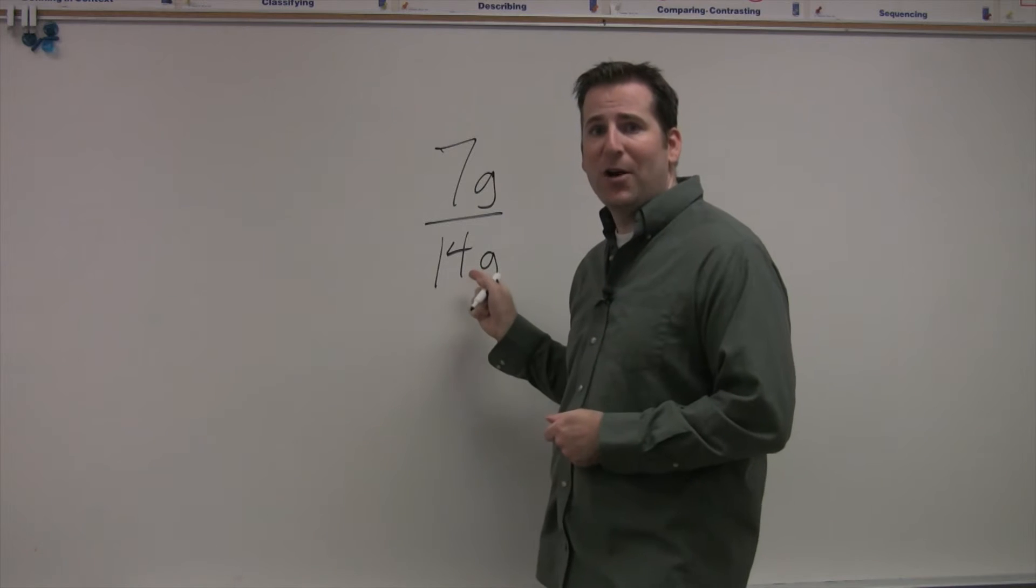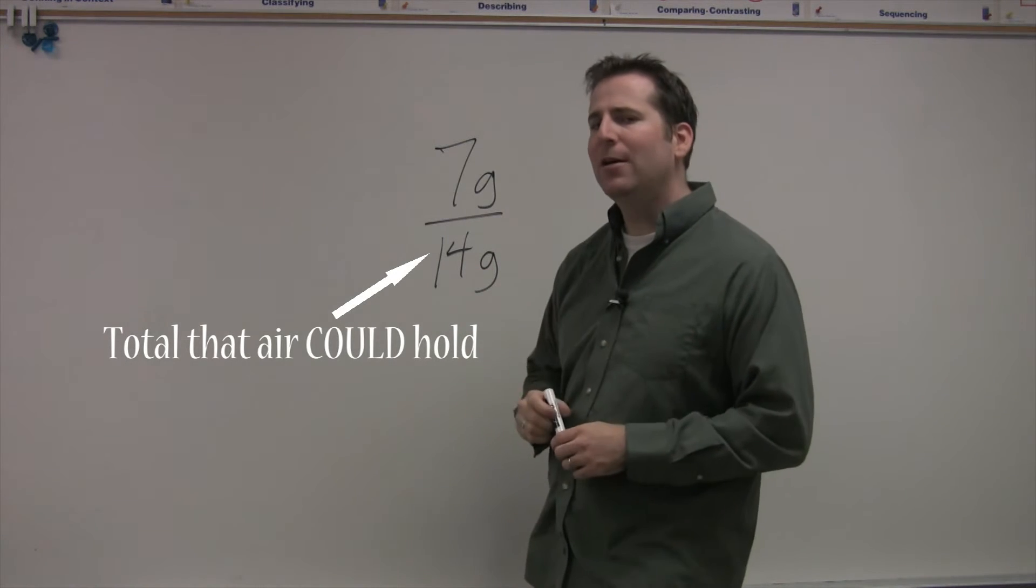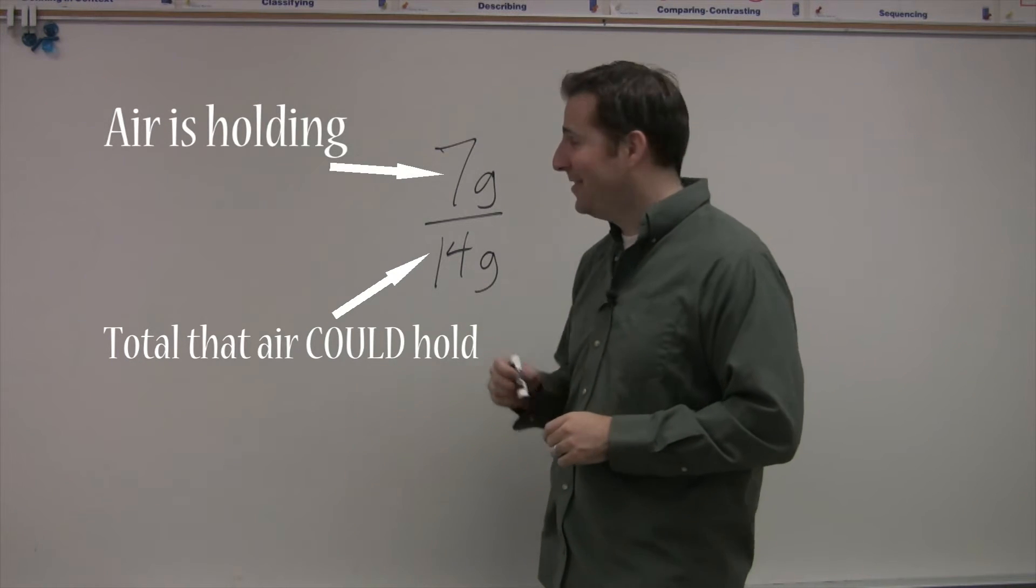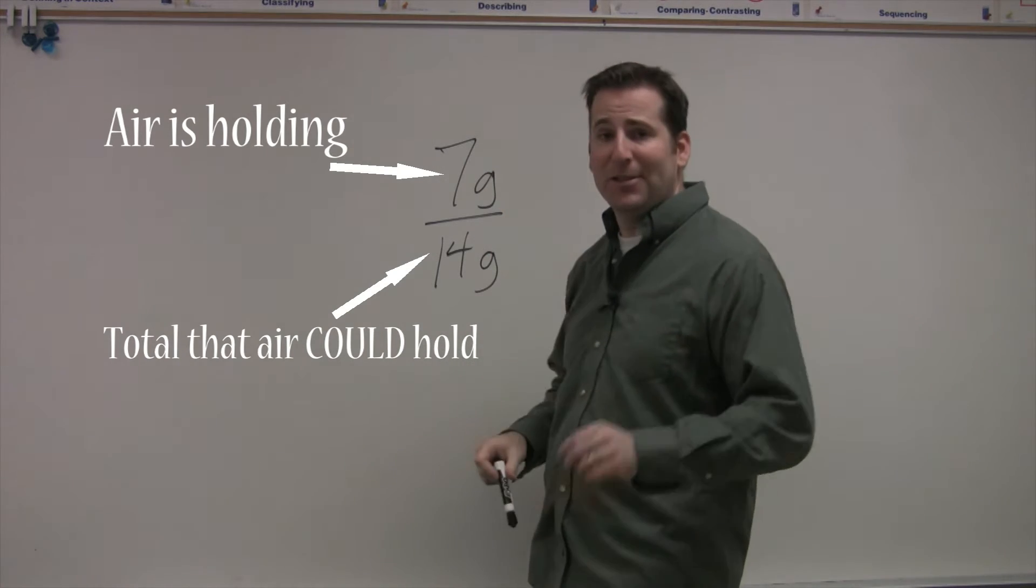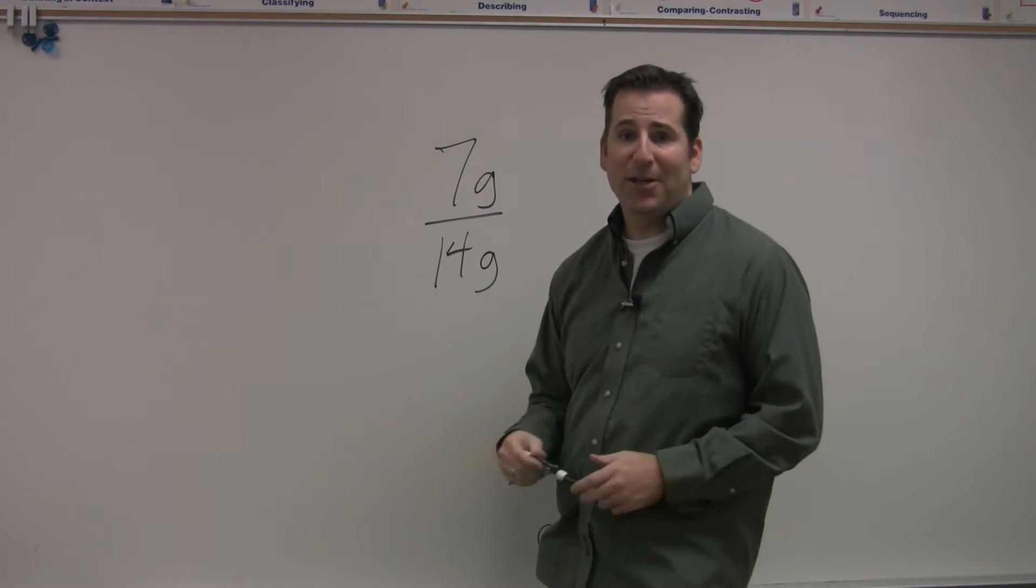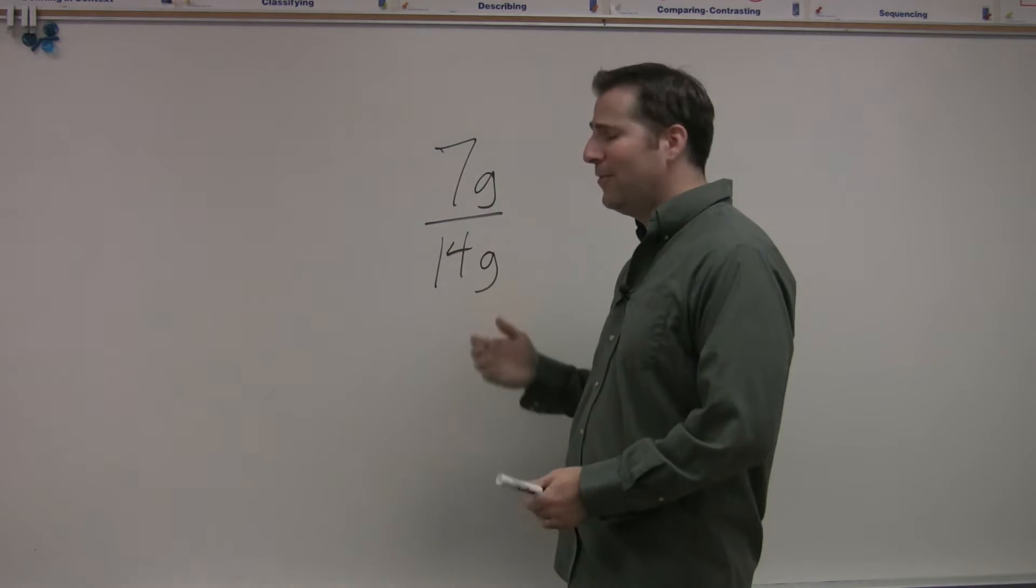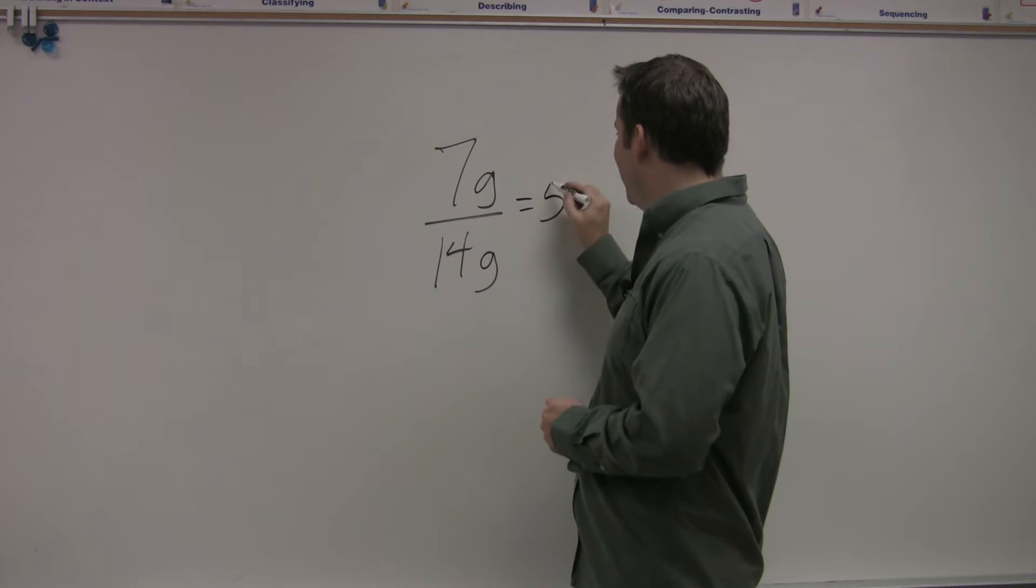Remember, 14 grams is how much the air could hold, but it's currently holding 7. That, as a fraction, is simple to do. It's 7 divided by 14. You hit the percent key, you've got your answer. But clearly, without even doing that, you could do some mental math here. 7 over 14, that's half. That means the relative humidity is 50%.